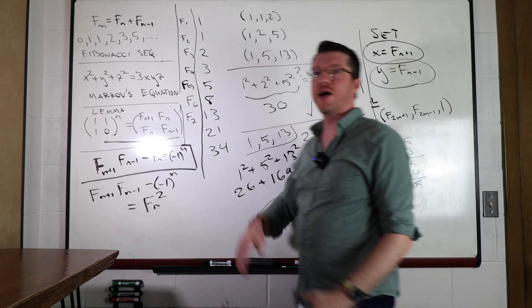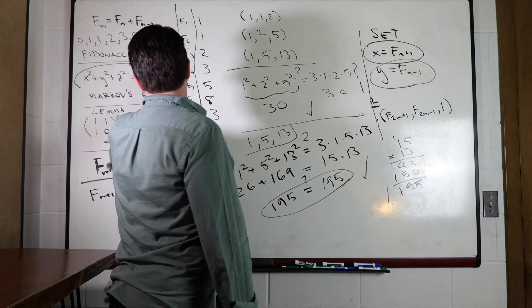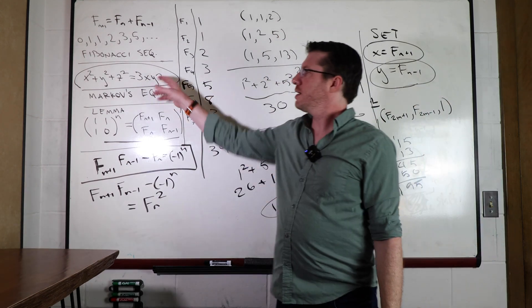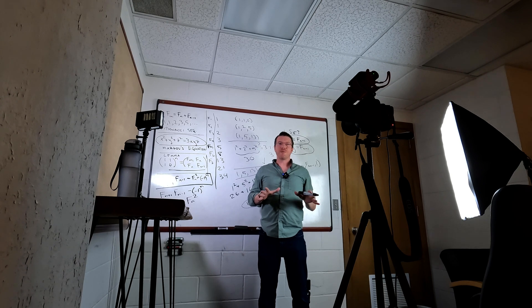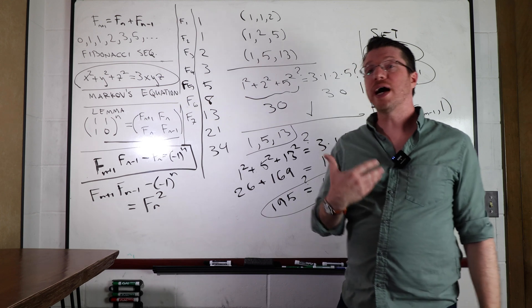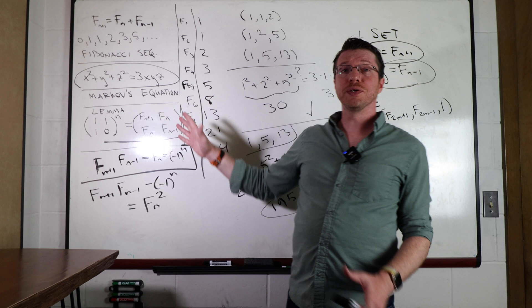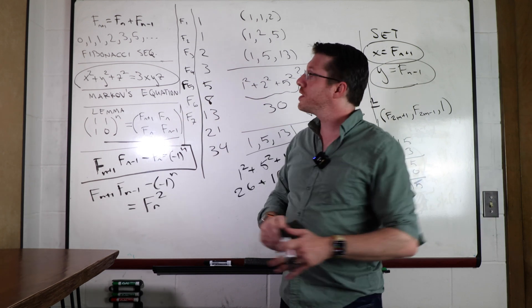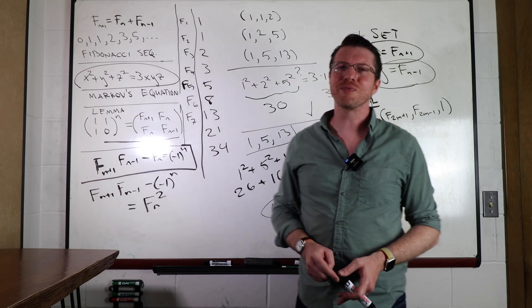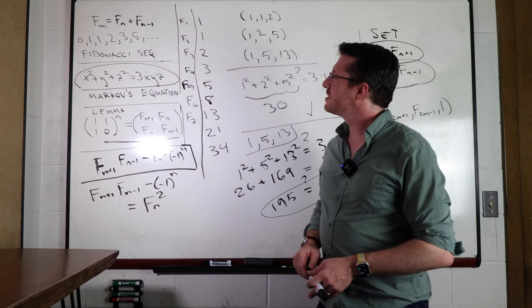We have now found an infinite family of solutions to Markov's equation where z equals 1, and x and y are consecutive odd-indexed Fibonacci numbers. The first time I encountered Markov's equation was in graduate school, and I always thought this was a really clever approach to the problem.